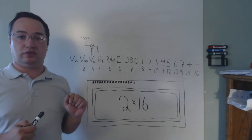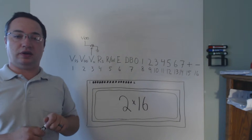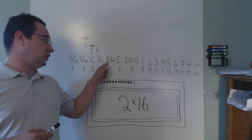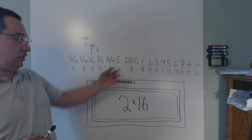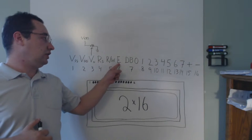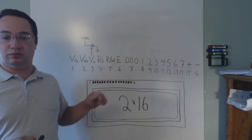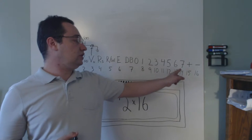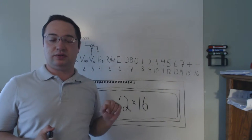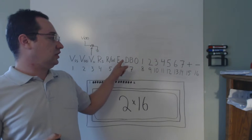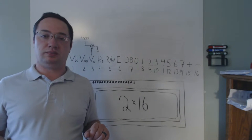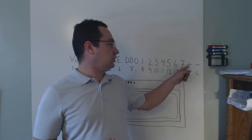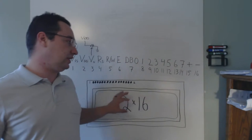The next pins are RS, RW, and E. RS is the register select pin — it's a control pin I'll talk more about later. RW is the read/write pin, which sets the direction of whether you're writing into the screen or reading out of it. The enable pin is the pin you strobe to make actions happen. Next are the DB0 through DB7 pins — these are the pins for the parallel bus, and this bus is eight bits wide.